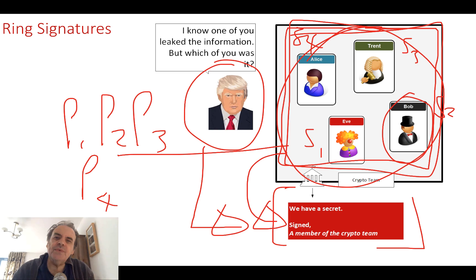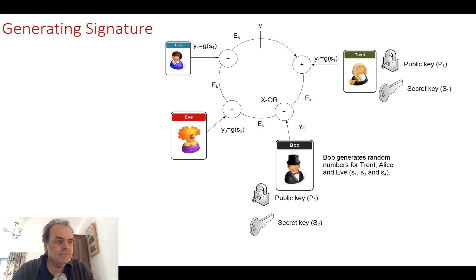The method that we'll see that's used is to be able to fake the secret keys for each of the entities apart from the actual signer. The signer then uses a trapdoor function to be able to validate his secret key.